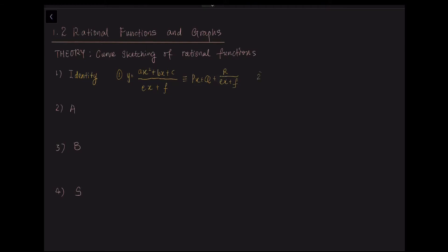The second identity is where the numerator and denominator have the same power. In this case, we have AX squared plus BX plus C over DX squared plus EX plus F, which we can rewrite into another equivalent form: P plus QX plus R over DX squared plus EX plus F. Now we have finished transforming the equation into their equivalent identities.